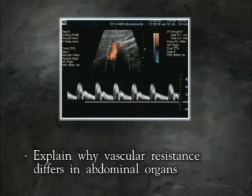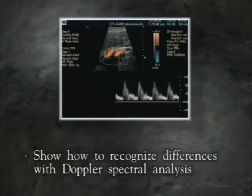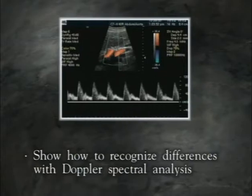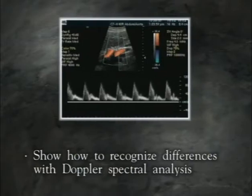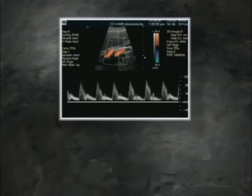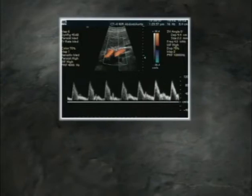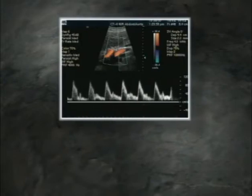Why does the vascular resistance differ in the abdominal organs, and how do we recognize these differences with Doppler spectral analysis? The answers to these questions are the key to the successful application of abdominal vascular sonography.